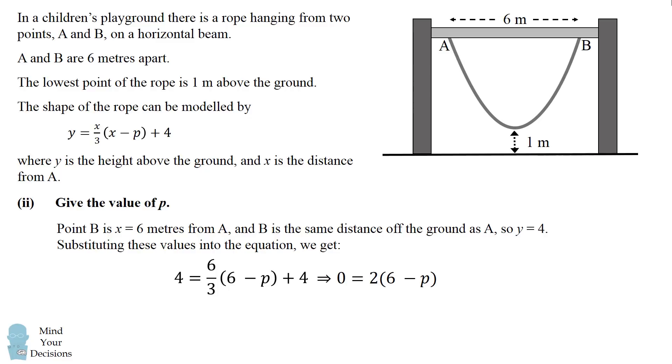We can then simplify this to be 0 equals 2 times the quantity 6 minus p, which then simplifies to be p equals 6.